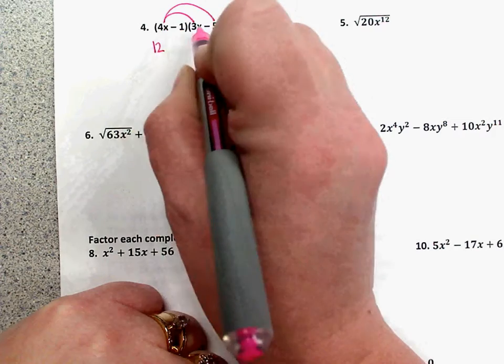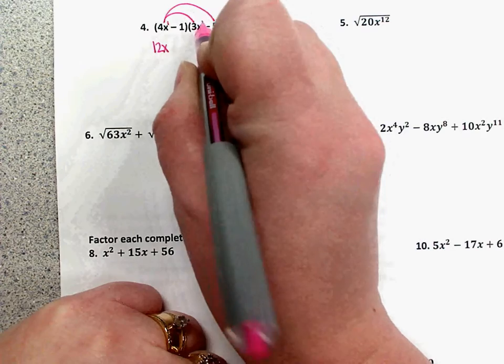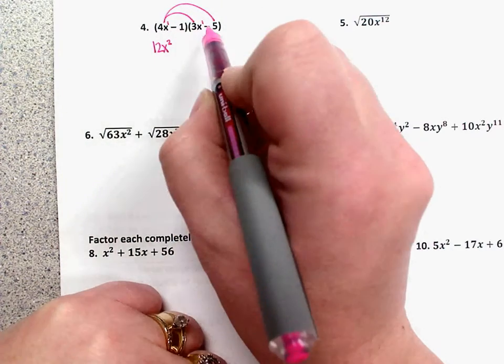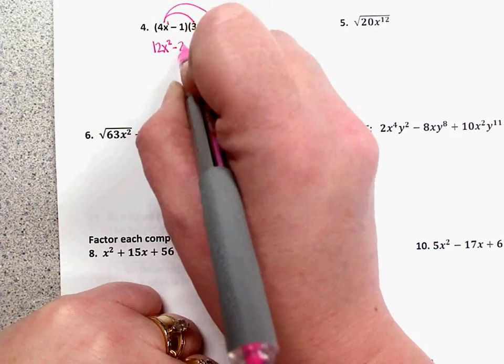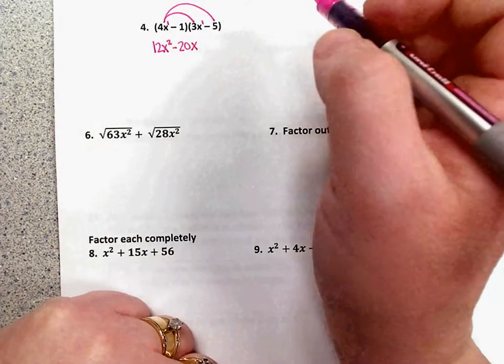The exponents on the like variables will add. So that's x to the first times x to the first, so that becomes x to the second. 4x times negative 5, the coefficients, 4 times negative 5 is negative 20. You have an x without another x to add exponents with, so it's going to stay an x.